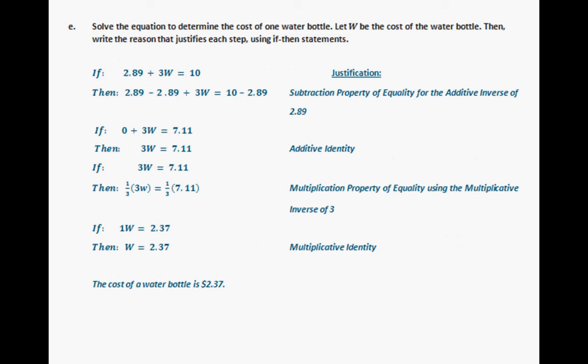All right, you should have something that looks like this. Again, they decide to use the 2.89 plus 3 times W equals 10. Again, everything should be the same here, except for instead of using the multiplication property, you can do dividing by 3. In the end, you should get a water bottle cost $2.37.